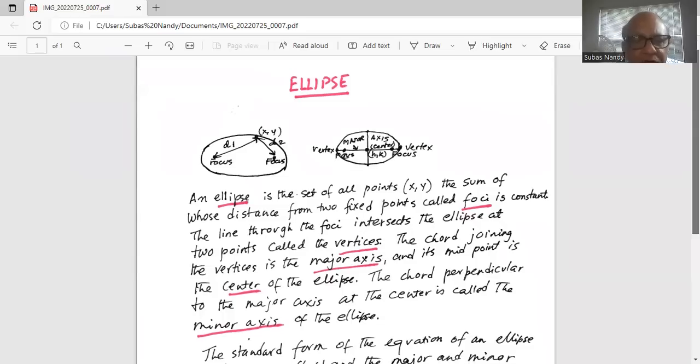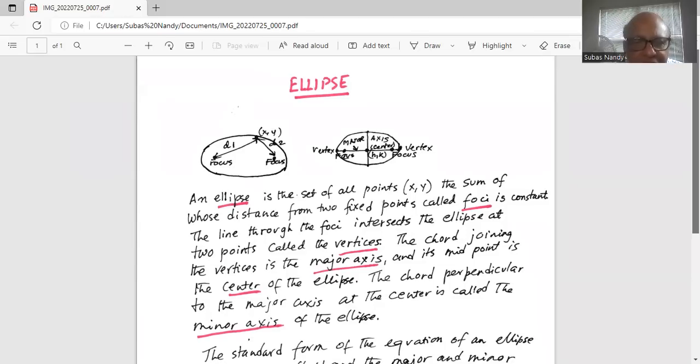The line through the foci intersects the ellipse at two points called the vertices. There's one vertex on the left hand side and one on the right hand side. The chord joining the vertices is called the major axis. In this case I've shown the major axis as horizontal, and its midpoint is called the center of the ellipse.